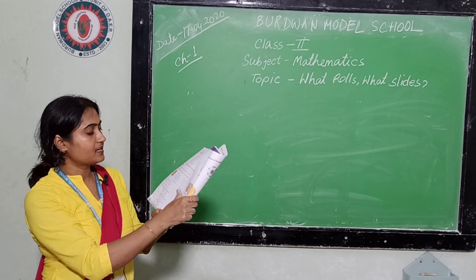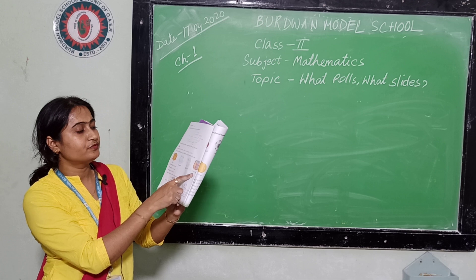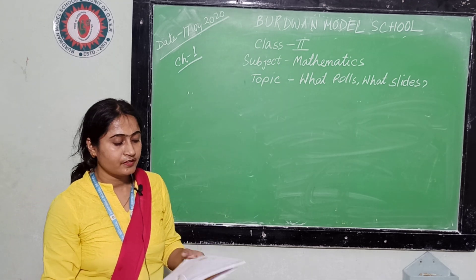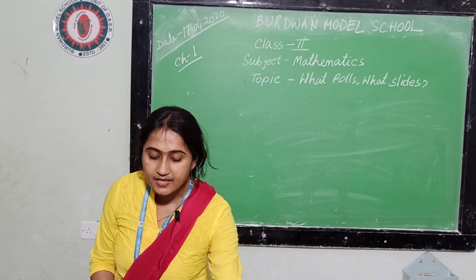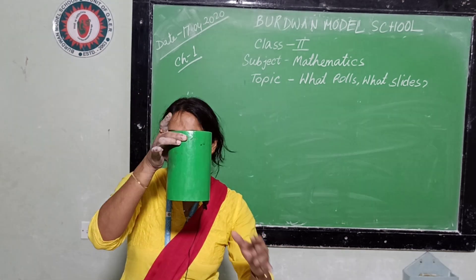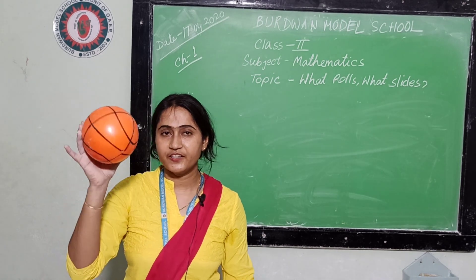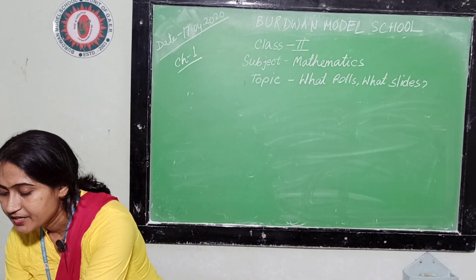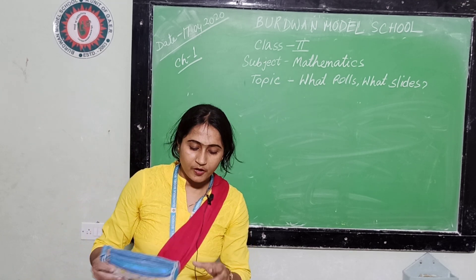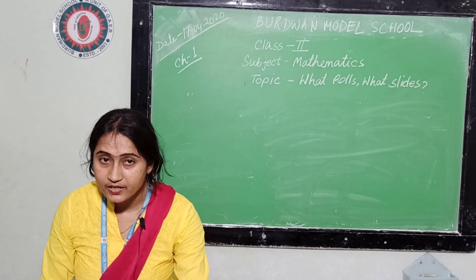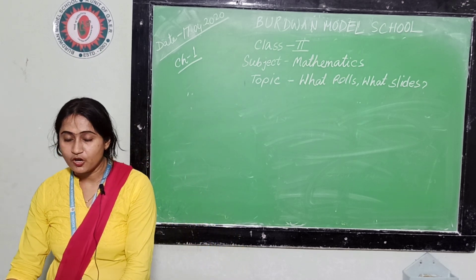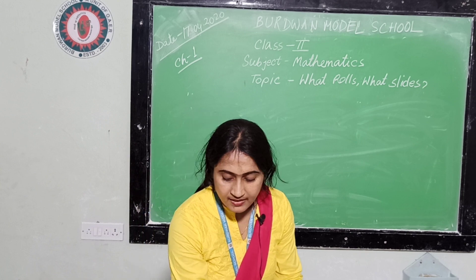And cube — ice cube, sugar cube, chocolate box, dice — these are the examples of cube. Now: this is a cone, this is a cylinder, and sphere, this is cube, and this is cuboid. Which object can roll and which object can slide?